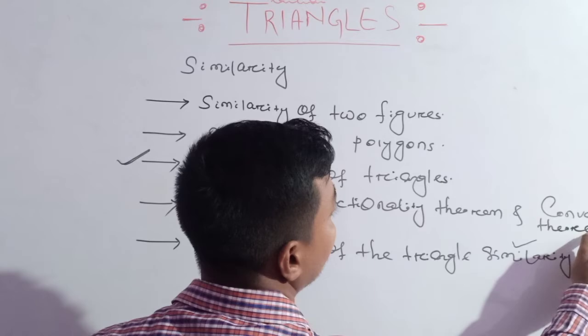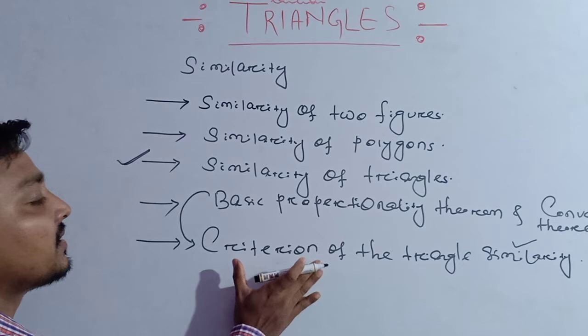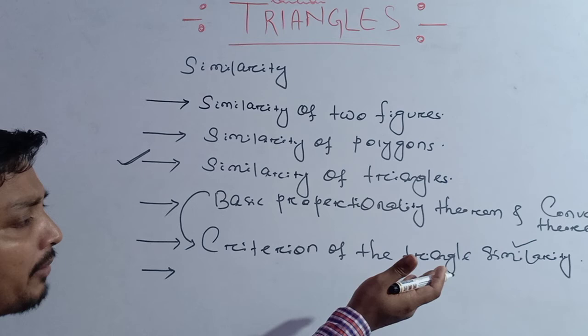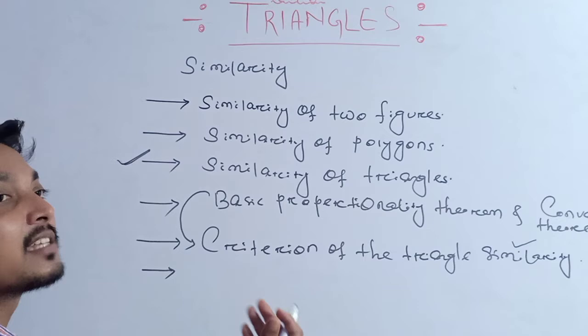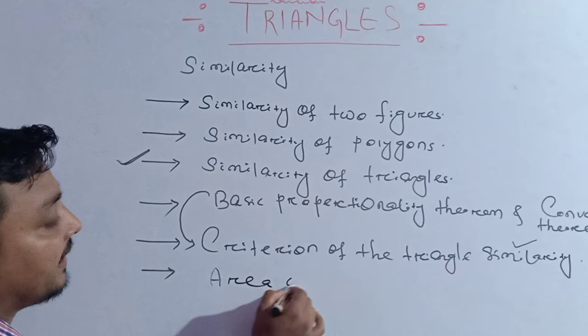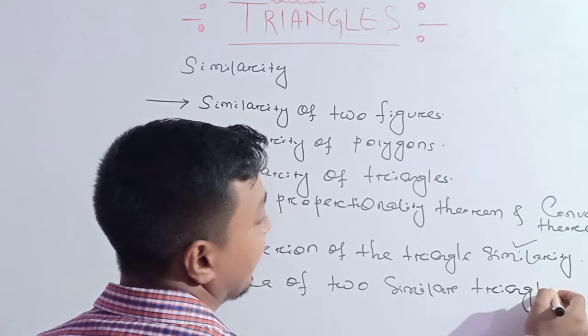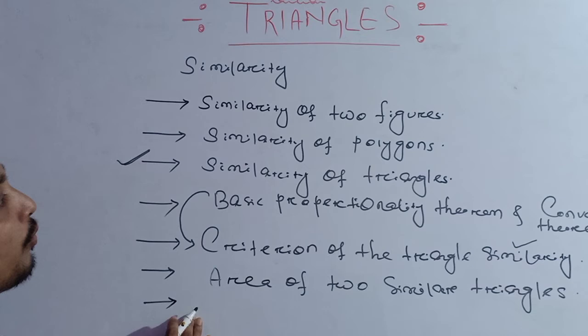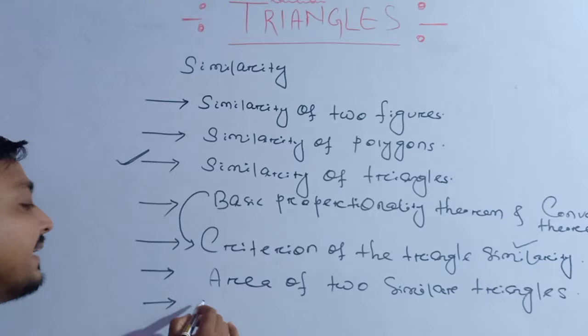By applying the Basic Proportionality Theorem we can solve the criterion of triangle similarity. After that, we will get to learn about the relationship between the areas of two similar triangles. And at the last, we will learn how by applying the similarity criteria we can derive the Pythagoras theorem.